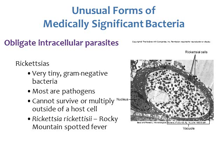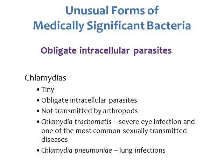Rickettsia cells are very, very tiny. Another medically significant obligate intracellular parasite is Chlamydia. These bacteria are also very tiny and must live inside a host cell. They're not transmitted by vectors like mosquitoes or ticks. Chlamydia trachomatis causes severe eye infection and is also one of the most common sexually transmitted diseases. Chlamydia pneumoniae causes pneumonia or lung infections.